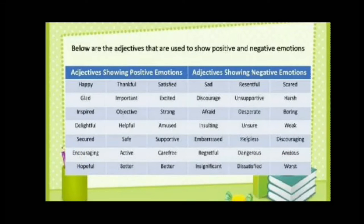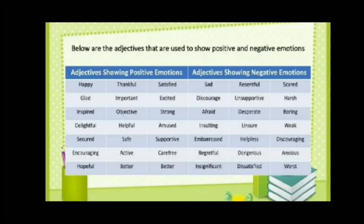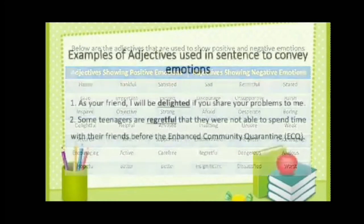Below are examples of adjectives used to show positive and negative emotion. A person's feelings can sometimes be observed or experienced visibly. For example, the way a person acts can reveal how they are feeling — such as sad, mad, happy, or ecstatic. Feelings tend to house emotions and often amplify a particular situation.